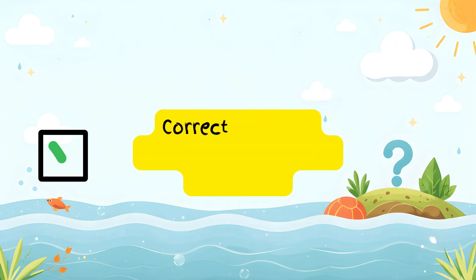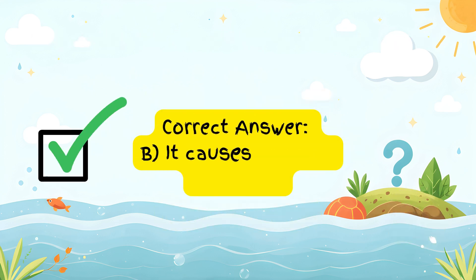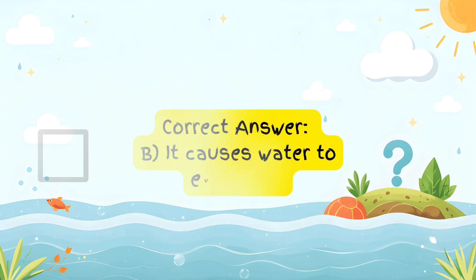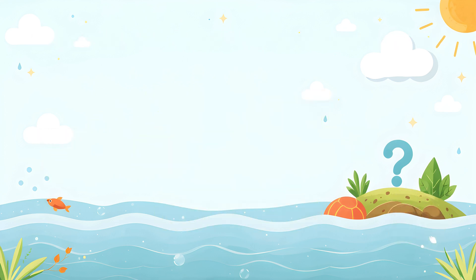Correct answer: B, it causes water to evaporate. The water cycle includes processes like evaporation, condensation, and precipitation. Freezing, however, is not part of the cycle.